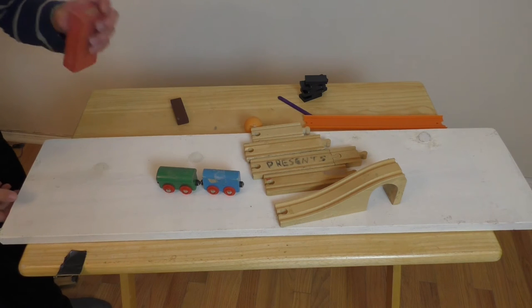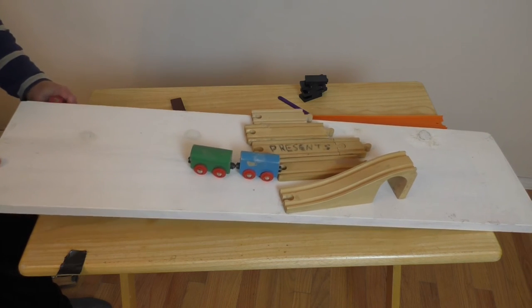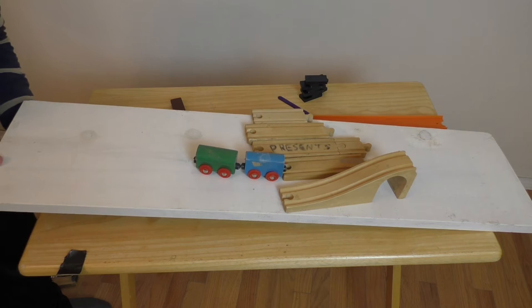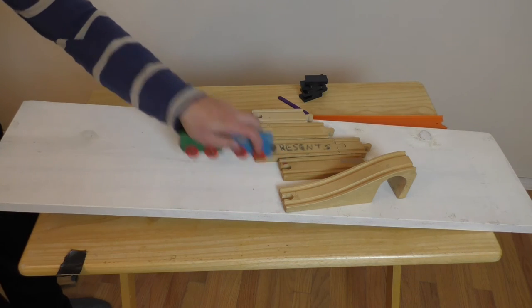So to start off we're going to put a block support under the board to make sure that the board is tilted at an angle. And I'm going to take the trains off for a little bit.